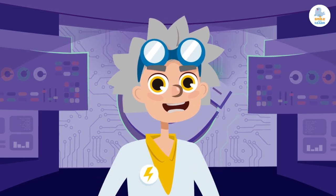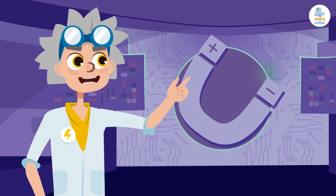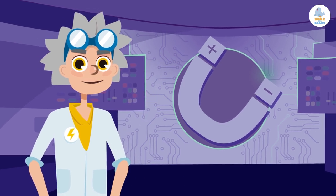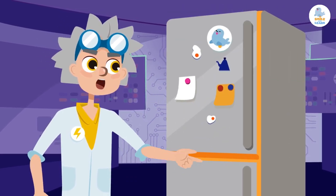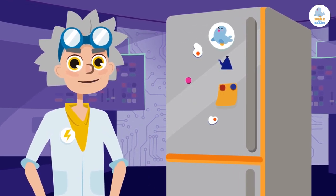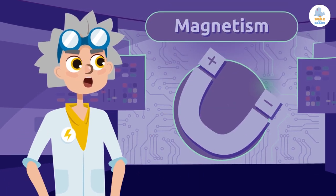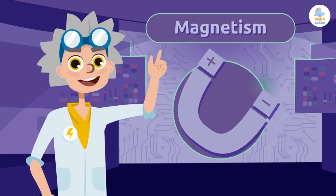Welcome back to Science Madness! In today's program we are going to learn about magnetism. Have you ever wondered why magnets stick to the fridge and don't fall off? This happens thanks to a property called magnetism. Let's see what it's all about.